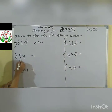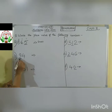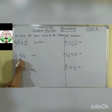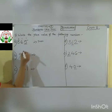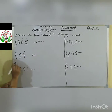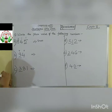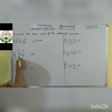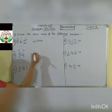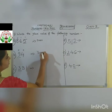Let us see the second question: 94. Here the underlined digit is 9. So let us give the place value. 4 comes under 1's place. 9 comes under 10's place. So what is the place of 9 here? 10's. So we will write down as 10's.